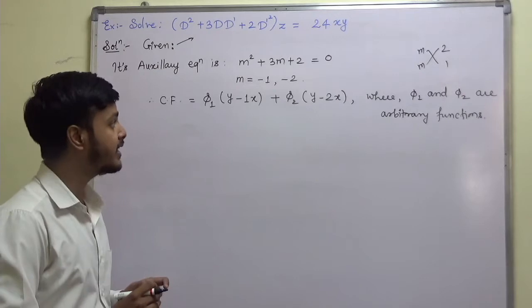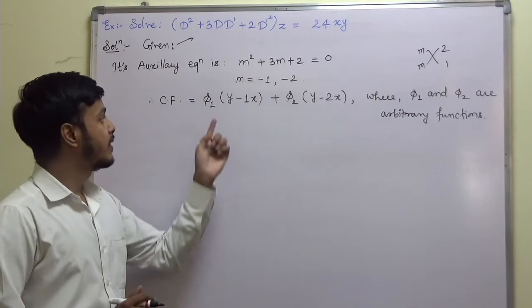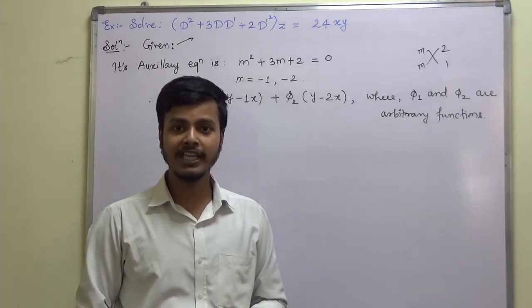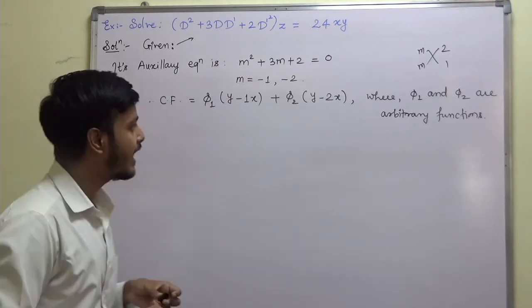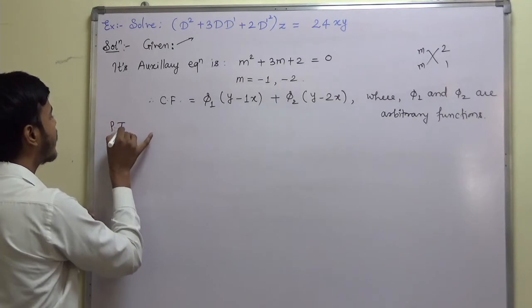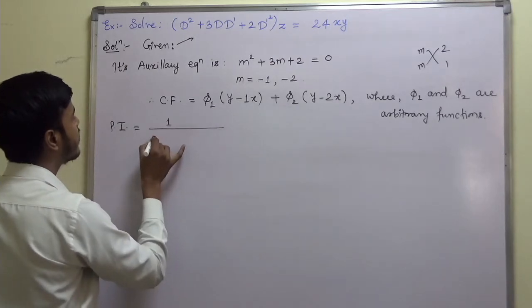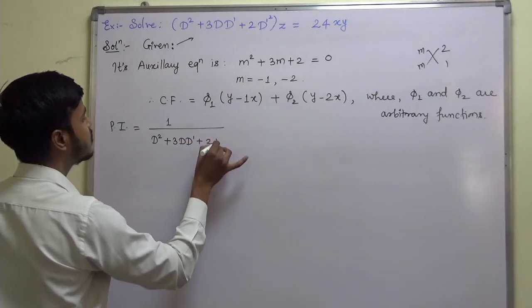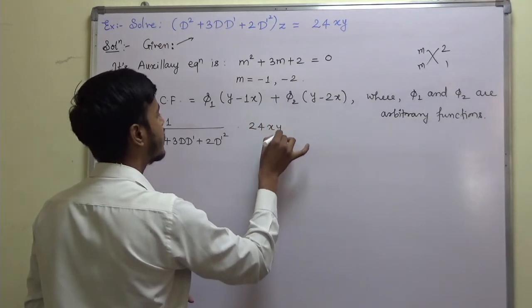Being a student of mathematics, you must write all these things precisely. Most students when they write CF write phi-1 and phi-2 as arbitrary constants — that is not the case, these are functions. Now we are done with CF. Let us find out PI. PI equals 1 upon (D-squared plus 3 D D-dash plus 2 D-dash-squared) into 24xy.